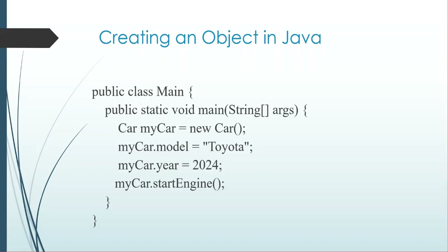Now let's create an object in Java. The code goes: public class Main { public static void main(String[] args) { Car myCar = new Car(); myCar.model = "Toyota"; myCar.year = 2024; myCar.startEngine(); } }. That is the language for how to code an object in Java.